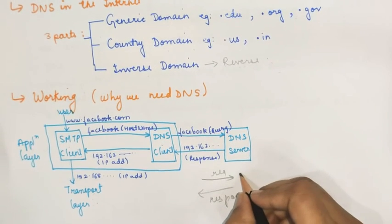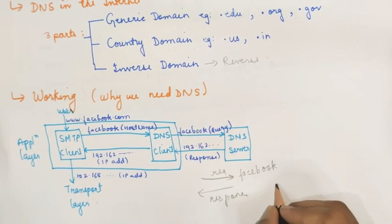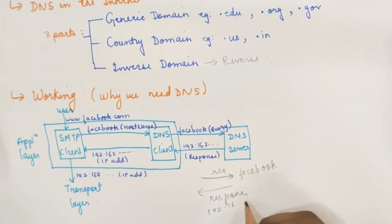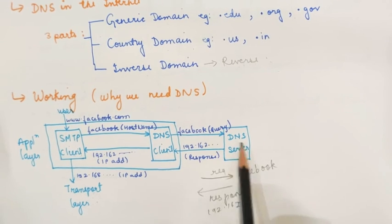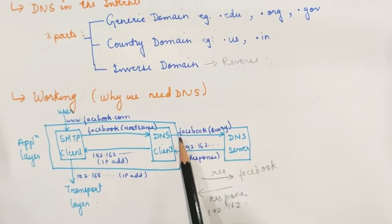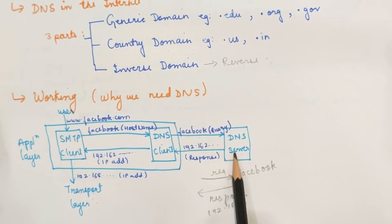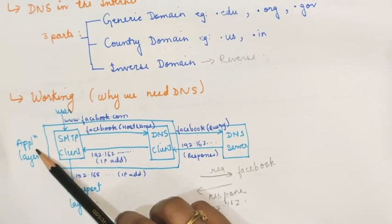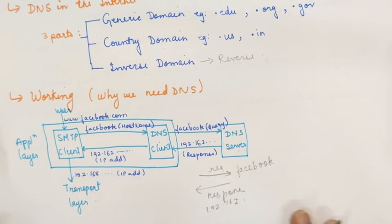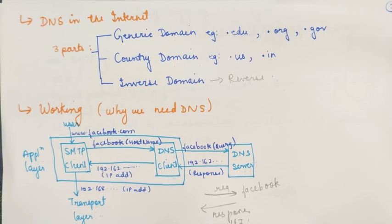Simply, we are sending a request for the IP address of Facebook, and we get a response back. The DNS client sends the request to the DNS server, the DNS server searches for the IP address of Facebook, and that response is sent back to the client and transferred to the transport layer. This entire procedure happens at the application layer. It is a request-and-response kind of process, and this is the way the domain name system works.